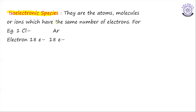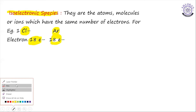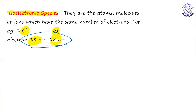Isoelectronic species are atoms, molecules, or ions with the same number of electrons. For example, Cl⁻ and argon both have 18 electrons, making them isoelectronic. These are the important terms that may appear in board examinations and will also be useful in organic chemistry. Please make neat notes, subscribe, and share the video. Thank you.